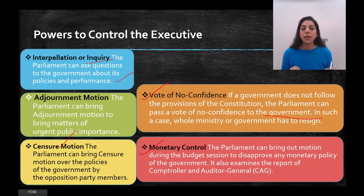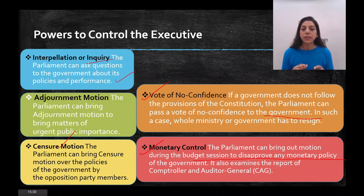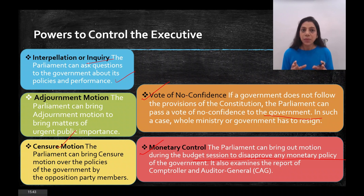Then there is monetary control. Parliament can bring a motion during the budget session to disapprove any monetary policies. If the government is passing a budget that people are not in favour of, Parliament can disapprove it and the government has to reconsider. Parliament also has the power to examine the report of the Comptroller and Auditor General of India — checking the nation's entire financial accounts.